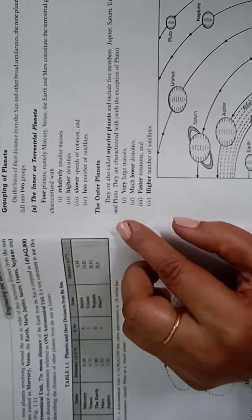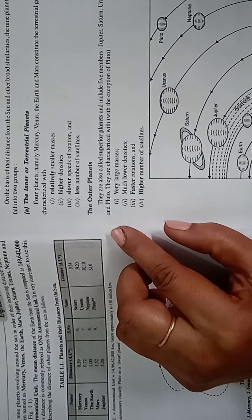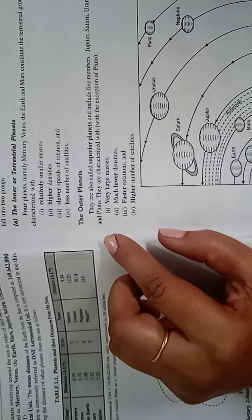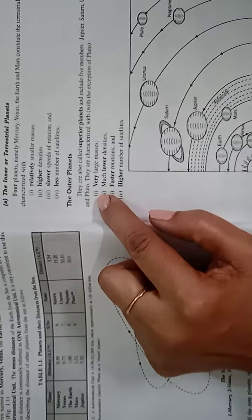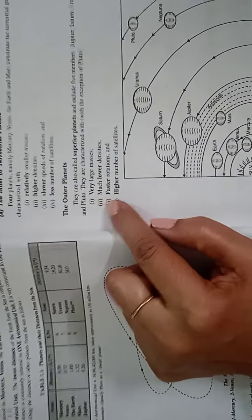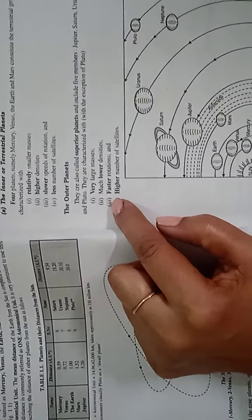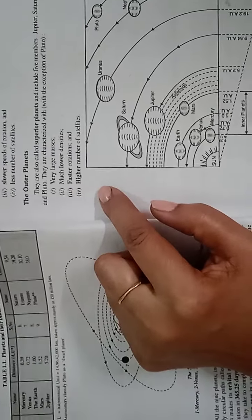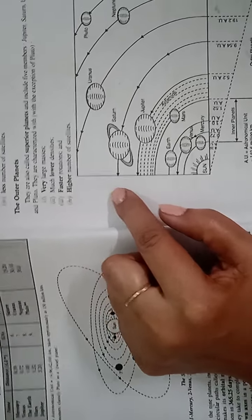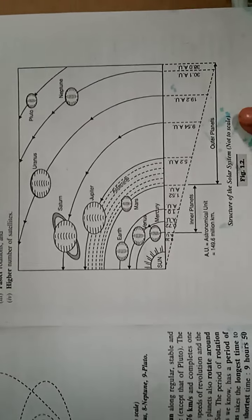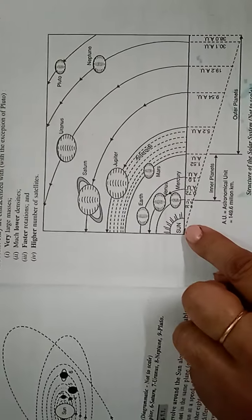The outer planets, also called the superior planets, include five members: Jupiter, Saturn, Uranus, Neptune and Pluto. With the exception of Pluto, they are characterized by very large masses, much lower densities, faster rotation and a higher number of satellites. This diagram of the structure of the solar system is important.